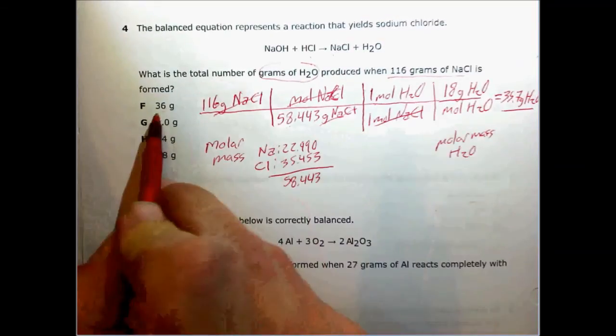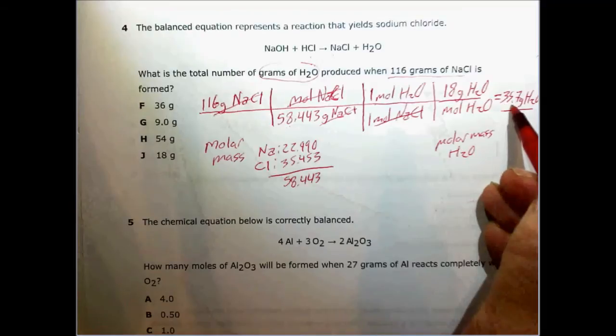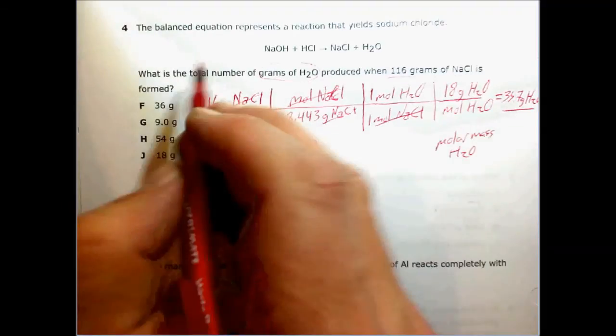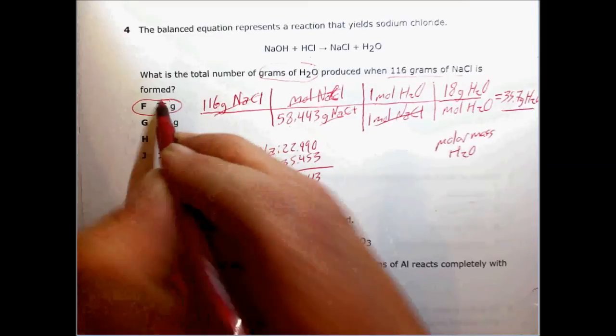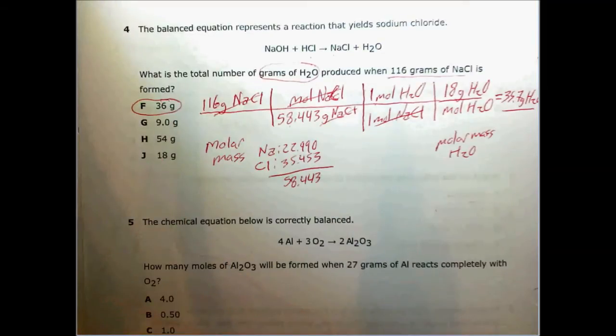We look at our choices here. 35.7. We'll round to 36. So this must be our answer. 36 grams of water.